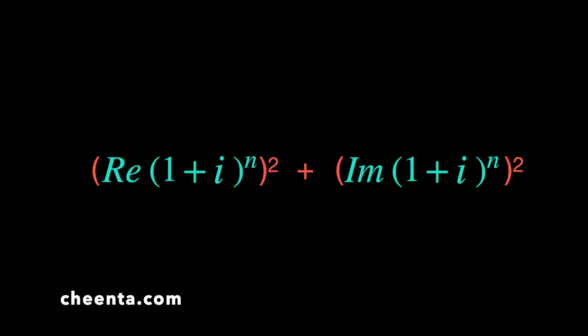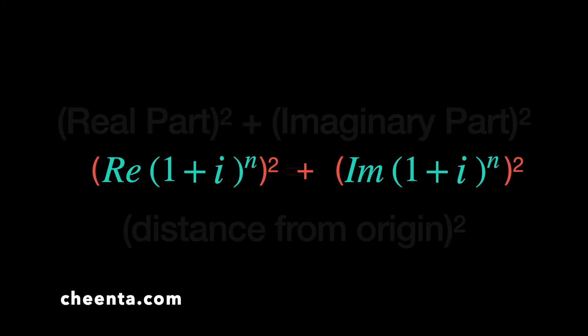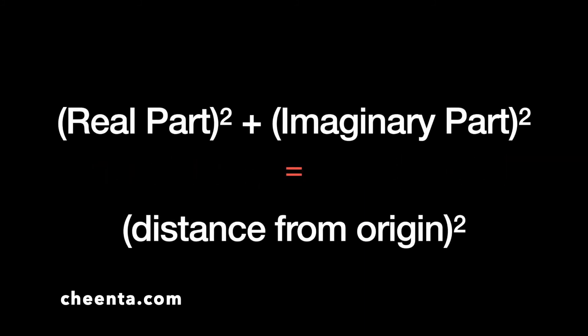There are a number of ways to find (real part)² + (imaginary part)², but we will do it in a visual manner. Notice that (real part)² + (imaginary part)² is the square of the distance of the complex number from the origin — that's the geometric interpretation.